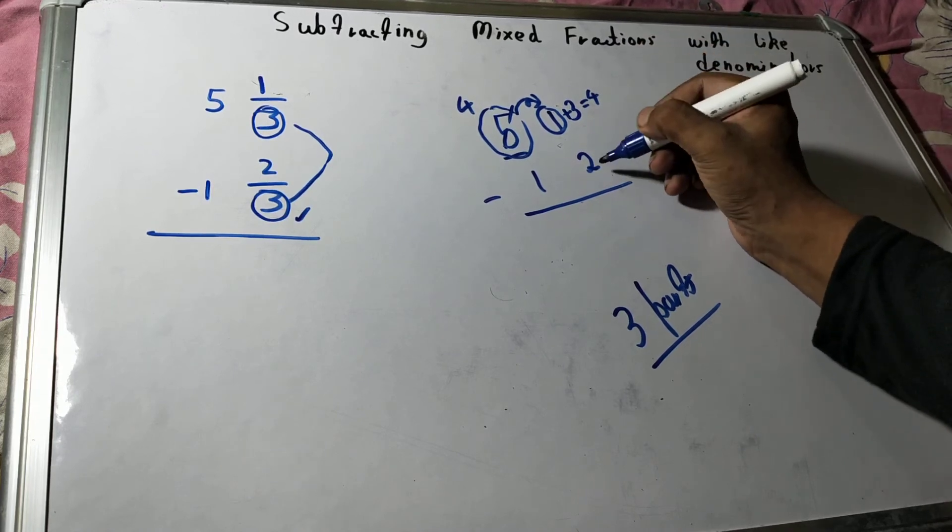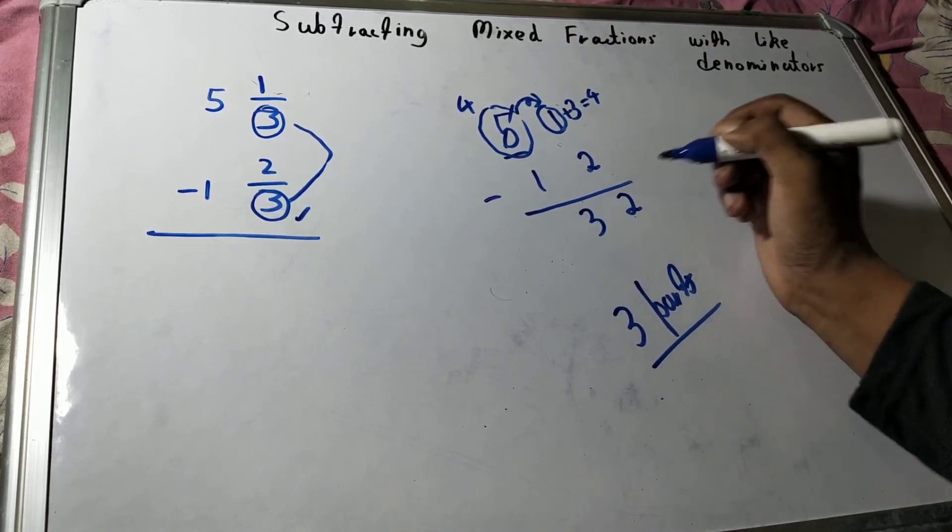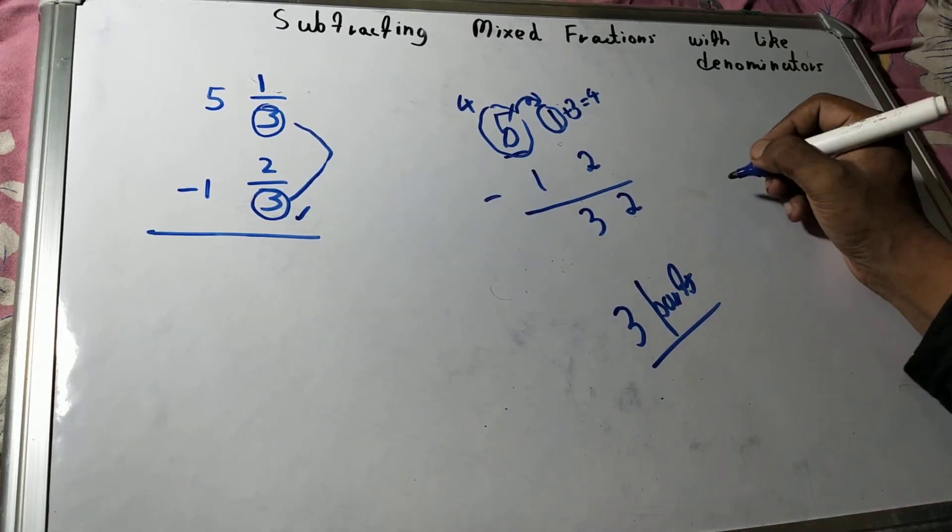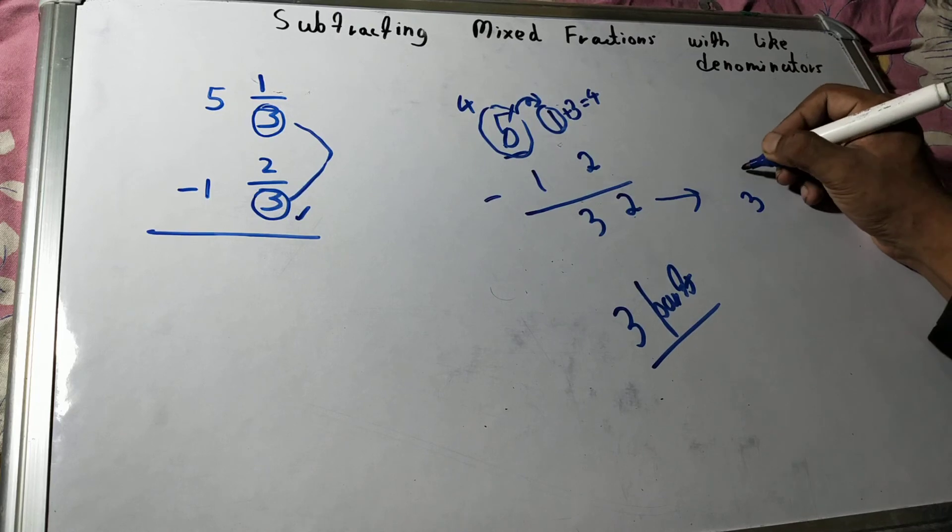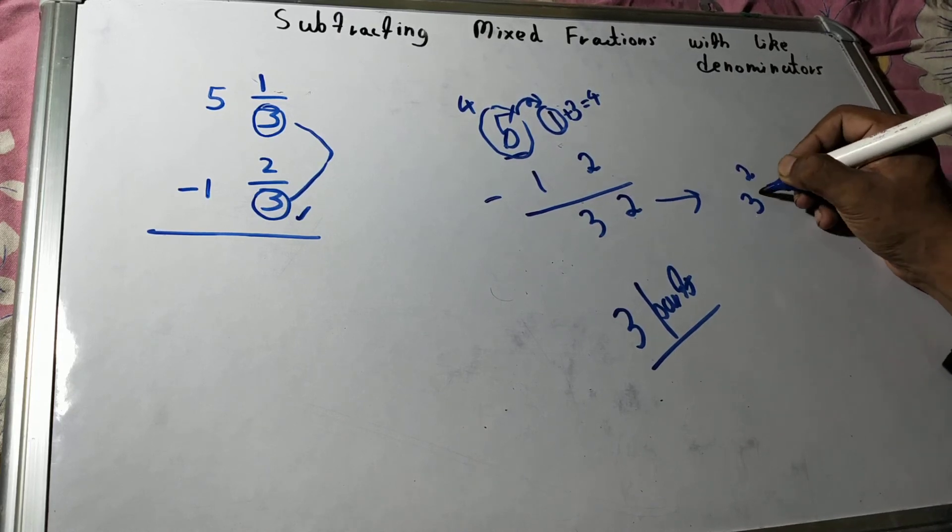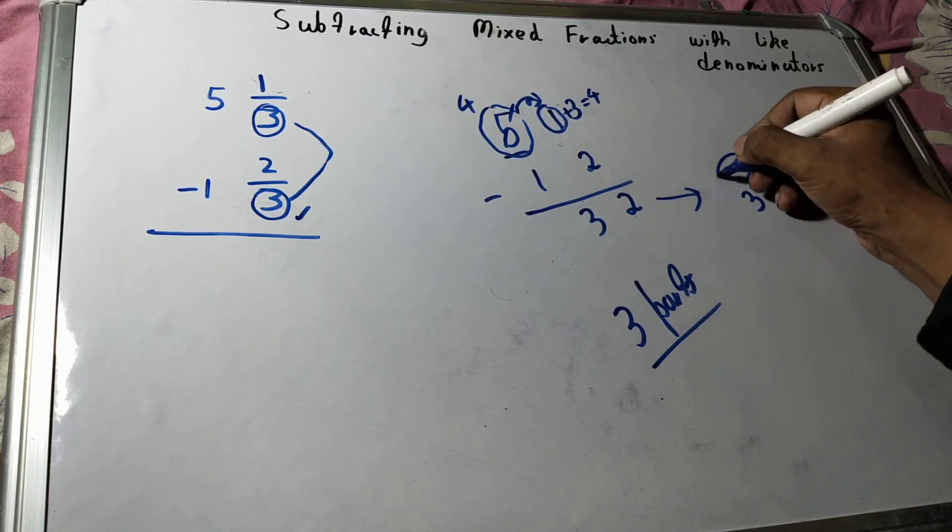So this will become 4. So 4 minus 2 will be 2, and 4 minus 1 will be 3. So your answer will be 3 and 2. And you can write it in mixed fraction form. Your whole part is 3, your numerator part is 2, and your denominator part is also 3. And that will be your answer.